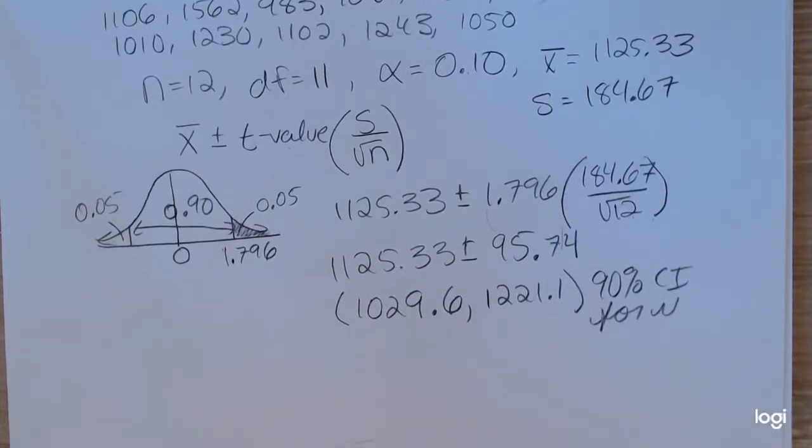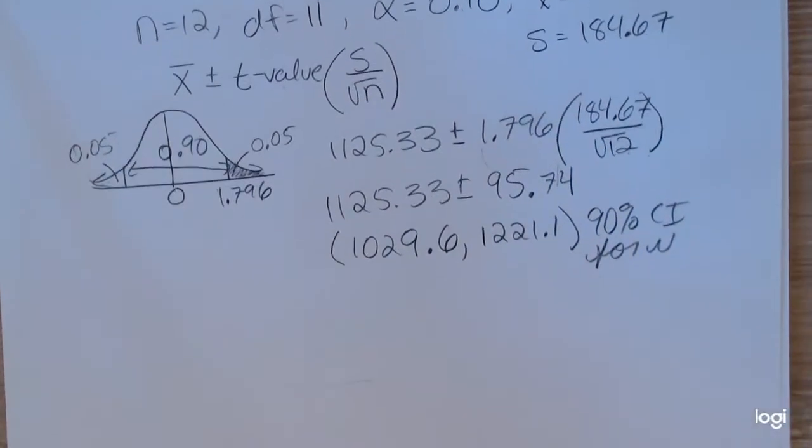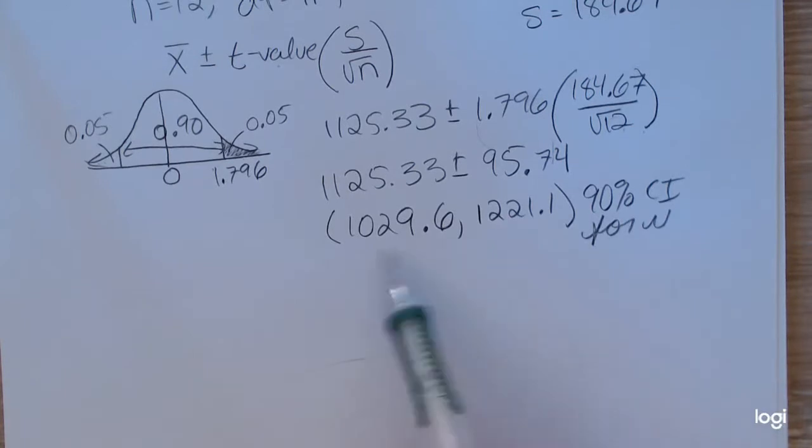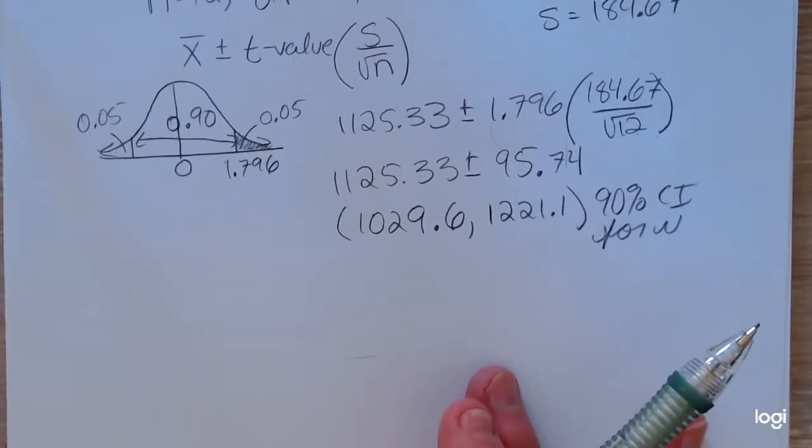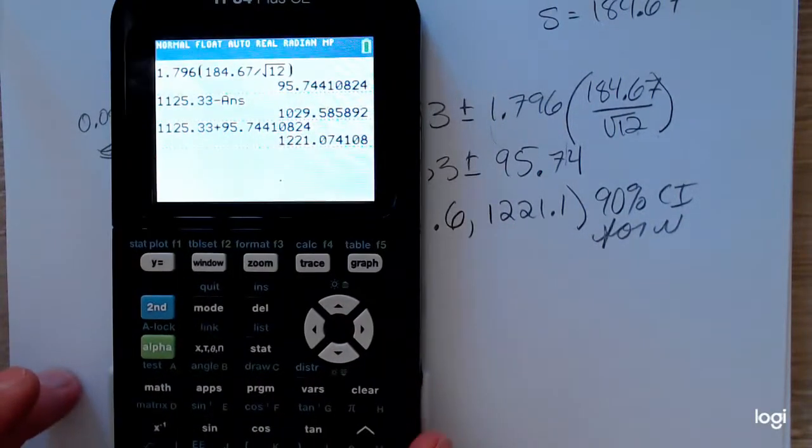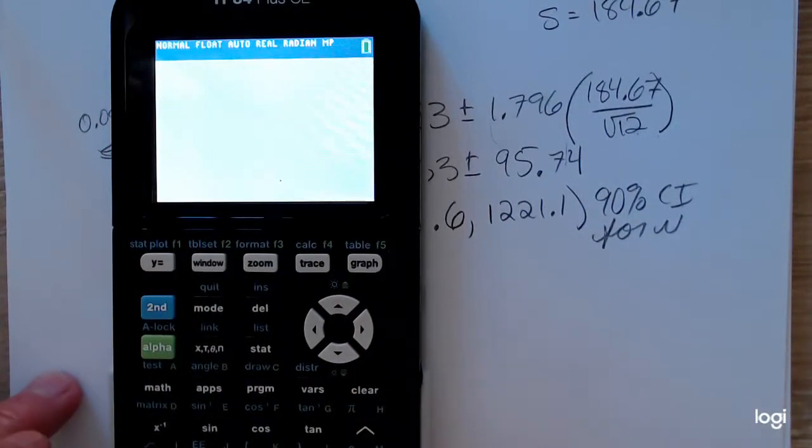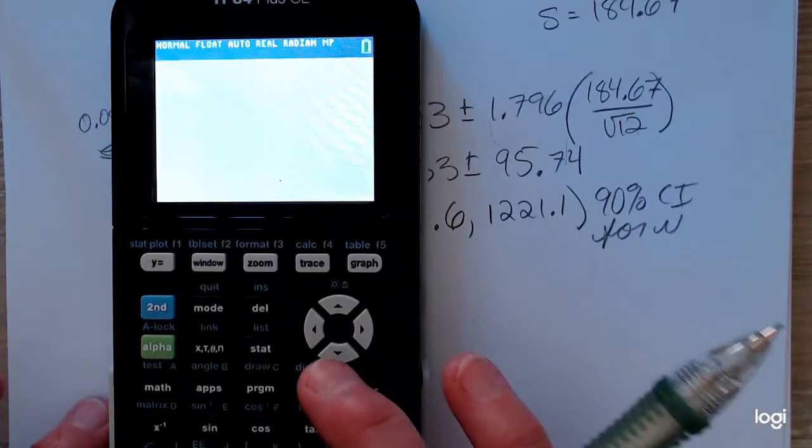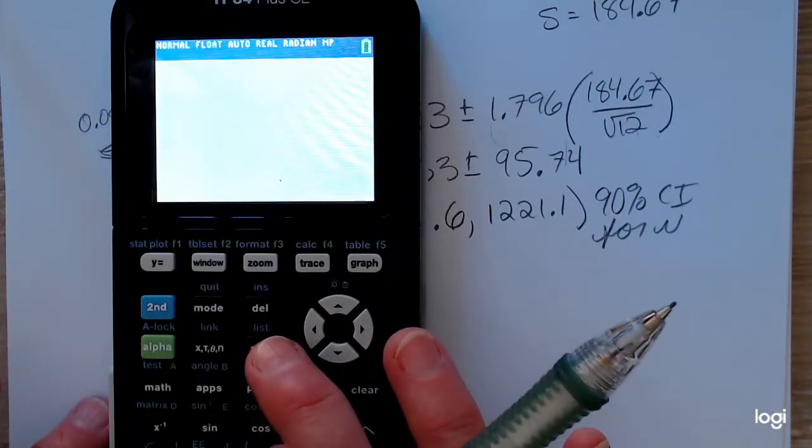If you wanted to get this directly from the calculator, in other words, you wanted just to jump right to the confidence interval, it's pretty easy to do. If you didn't have the data set already put in a list, you'd definitely want to do that. I did that previously. And after that,